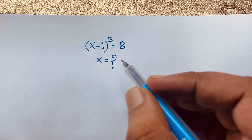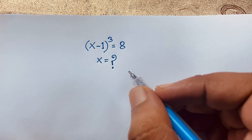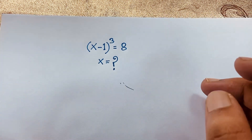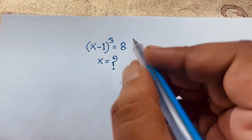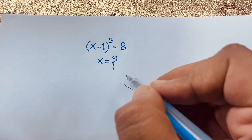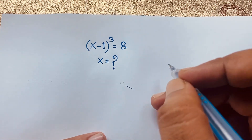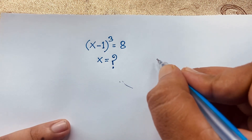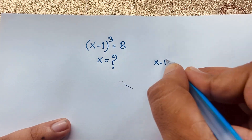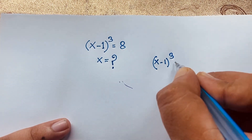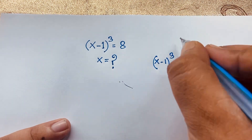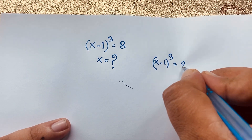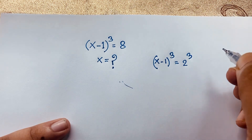How to solve this interesting math problem. We have (x minus 1) to the power 3 is equal to 8. We'll find three solutions, but one solution is a real solution. We can rewrite 8 as 2 to the power 3.